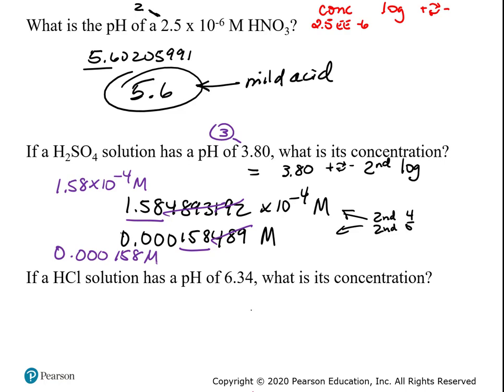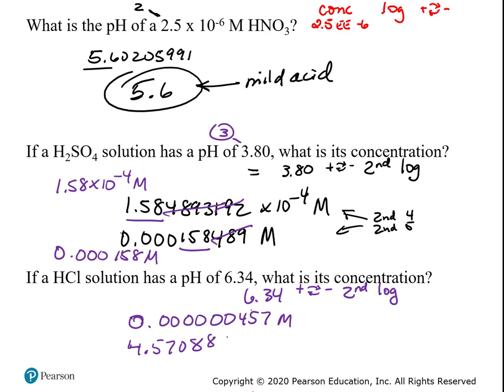The next one: if an HCl solution has a pH of 6.34, what is its concentration? I'm going to put 6.34 in, make it negative using the plus/minus button, then hit the second button and log to get the inverse log of negative 6.34. I got 0.123456457 molar, or in scientific notation: 4.570881896 times 10 to the minus 7.